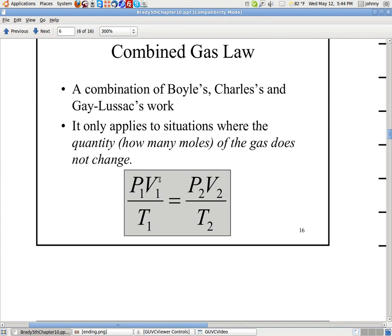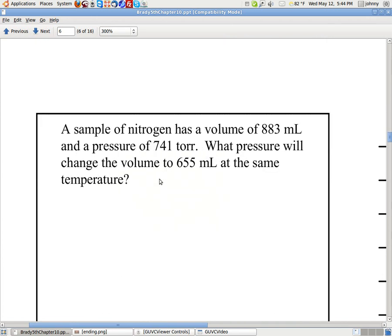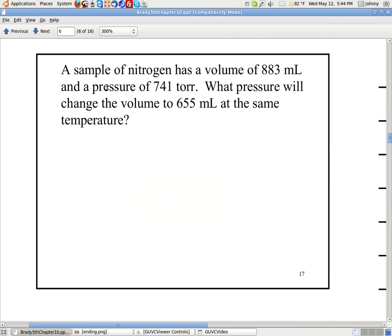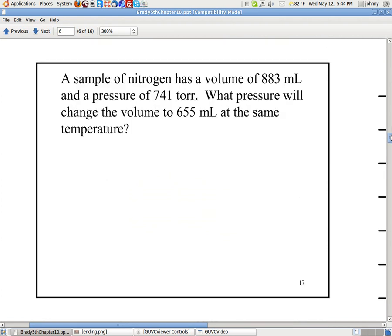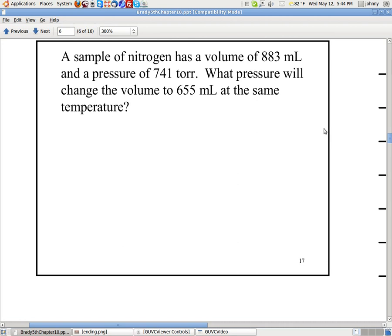Now I'm going to show you how to apply this. So let's look at this first problem here. It says a sample of nitrogen gas has a volume of 883 milliliters and a pressure of 741 torr. What pressure will change the volume at the same temperature?